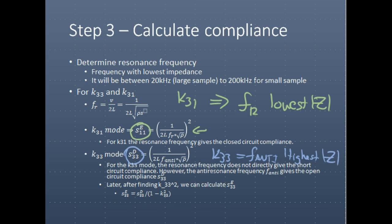So in order to find actually the compliance of constant electric displacement for the K33 resonator, you'll need to find the K squared value, as seen in this equation here. So S33E equals S33D divided by 1 minus the K, the coupling factor, of this material. And I'll describe how to calculate the coupling factor in the coming slides.